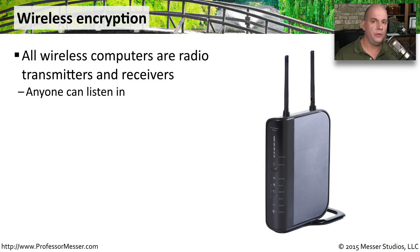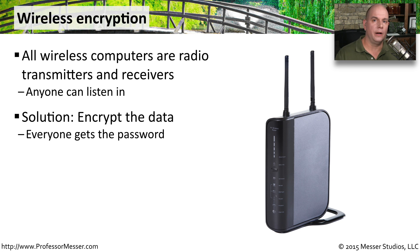When you're using a wireless network, everything you send is going across the air in radio waves, which means that everybody in your local area can hear everything you're sending. Obviously, we need to be able to encrypt data going over these wireless networks. We don't want somebody pulling our information out of the air. Fortunately, our wireless standards provide methods to encrypt everything, and only people with the right password can transmit or listen on that wireless network.